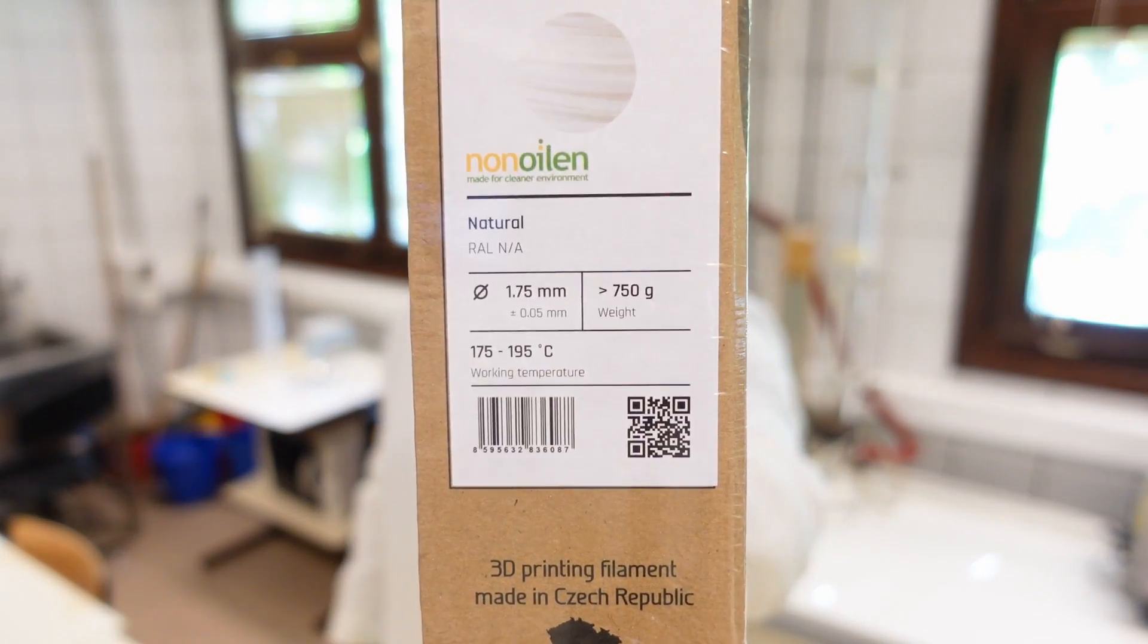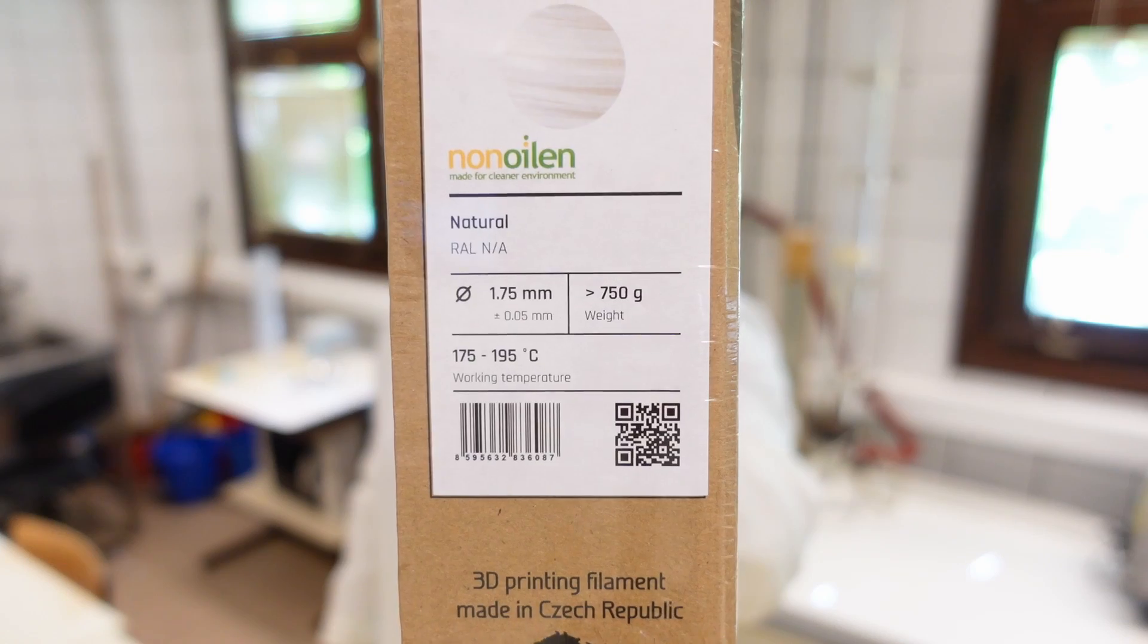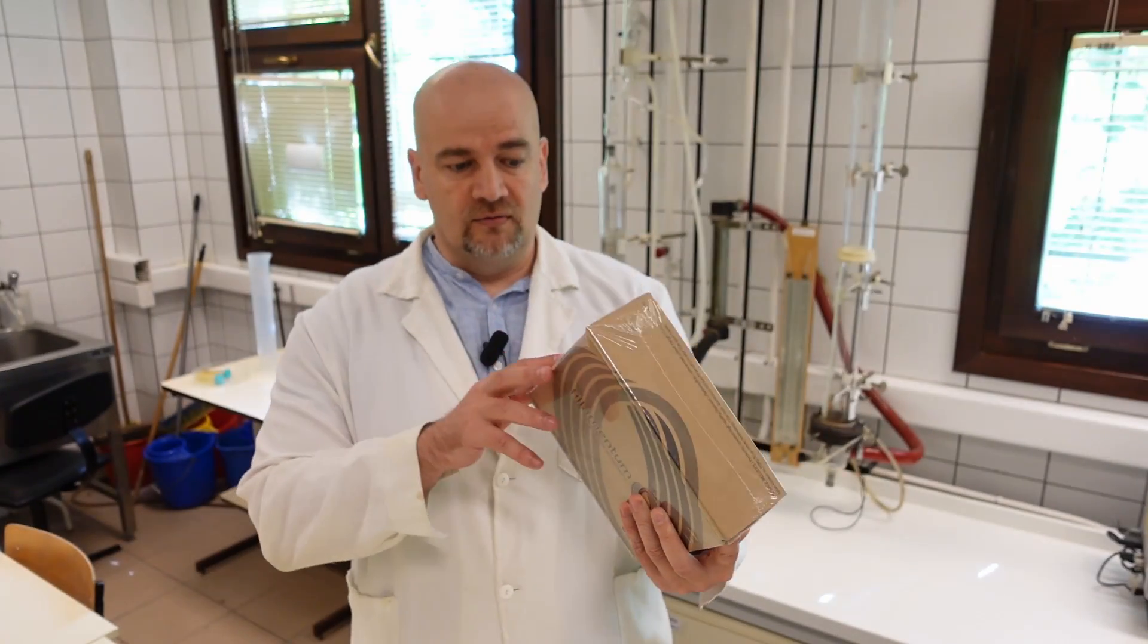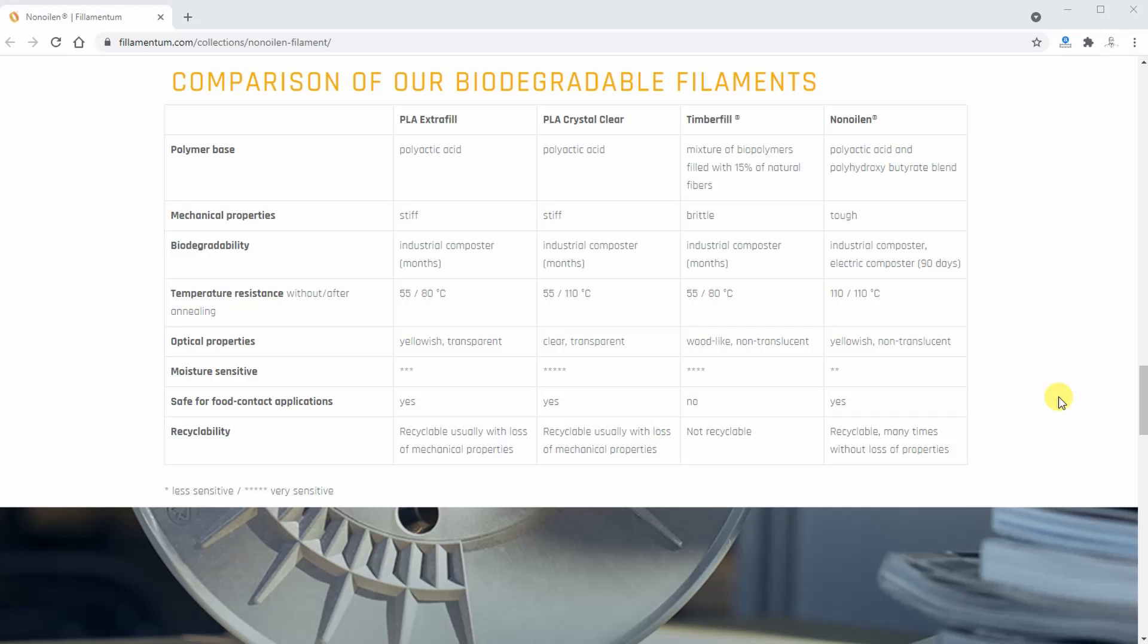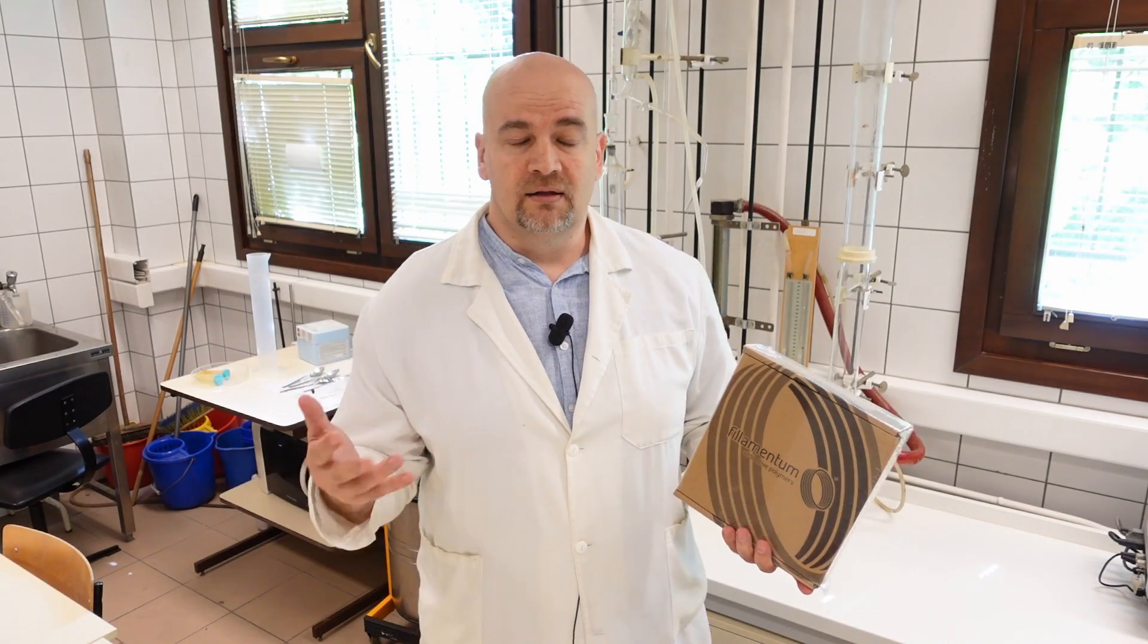The recommended printing temperature is 175 to 195 degrees Celsius, and on the website I checked the certifications. It is tough material, usually PLA is very brittle, so this is definitely something I have to try and test.